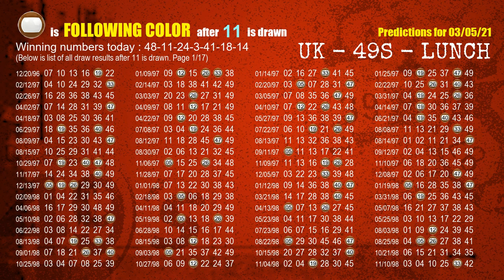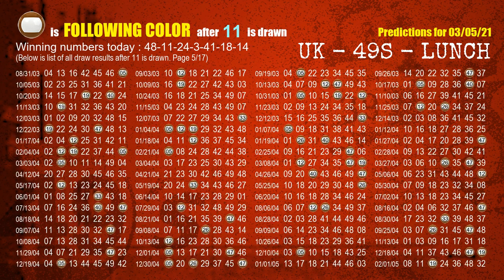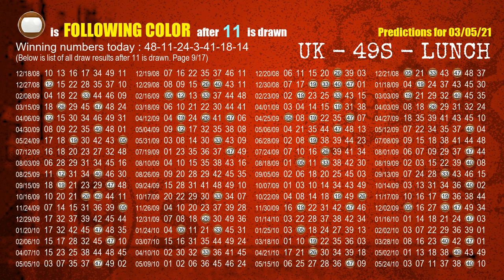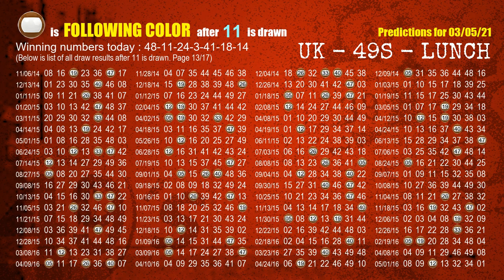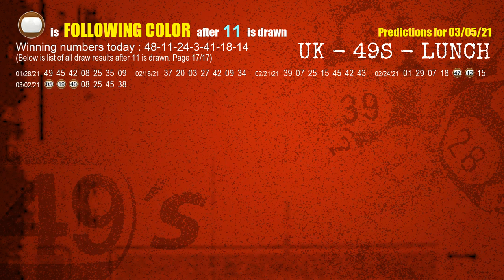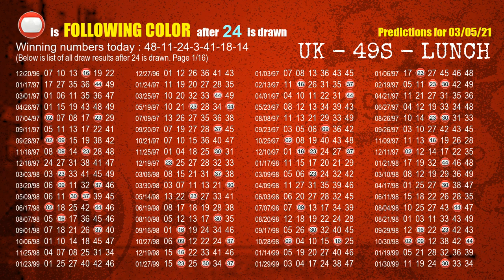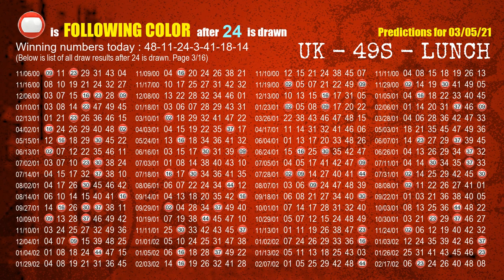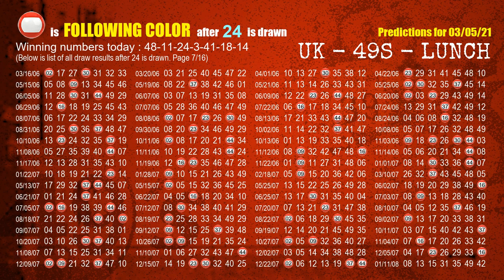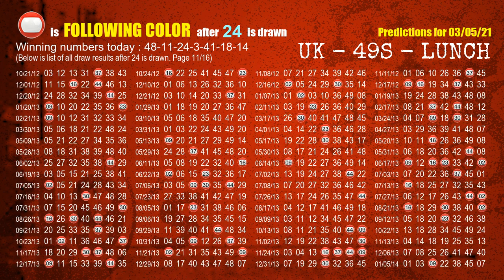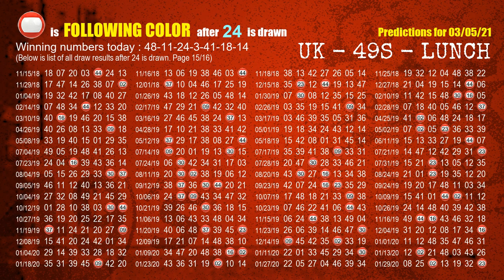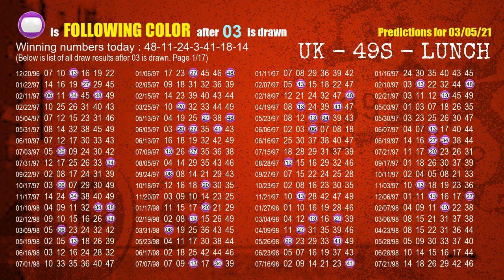The second winning number is 11. The most frequently following color is brown when 11 is the winning number in the last draw. The third winning number is 24. The most frequently following color is red when 24 is the winning number in the last draw. The fourth winning number is 03. The most frequently following color is purple when 03 is the winning number in the last draw.